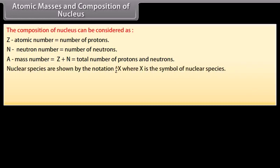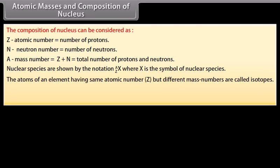Nuclear species are shown by the notation where X is the symbol of nuclear species. The atoms of an element having same atomic number, that is Z, but different mass numbers are called isotopes. For example, isotopes of hydrogen are...